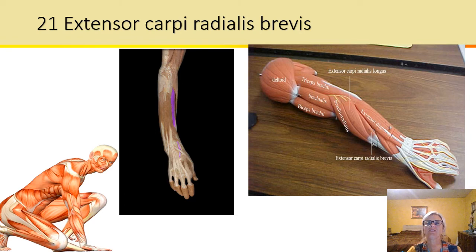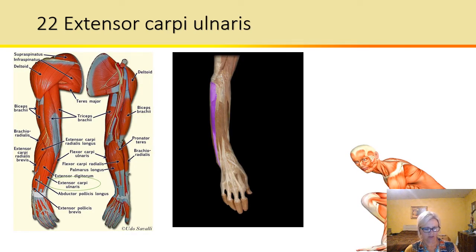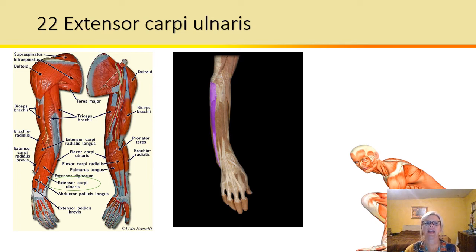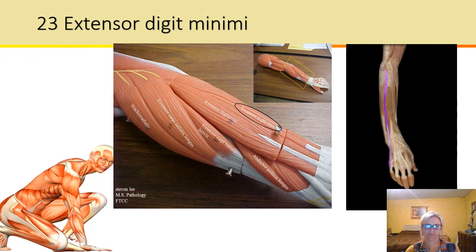So extensor carpi ulnaris: this goes along near the ulna. This is the wrist stretcher of the ulna — extends the wrist and abducts the hand.